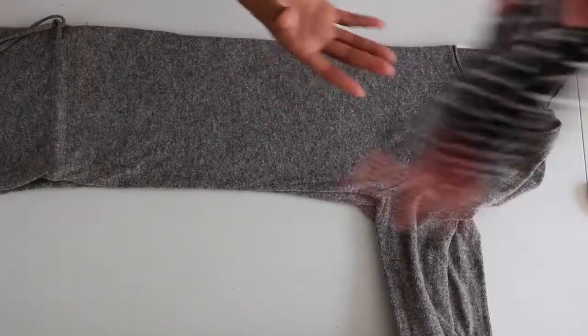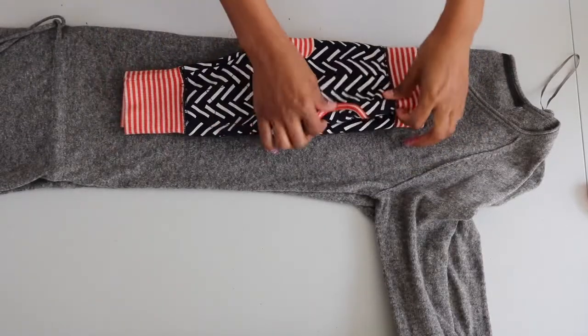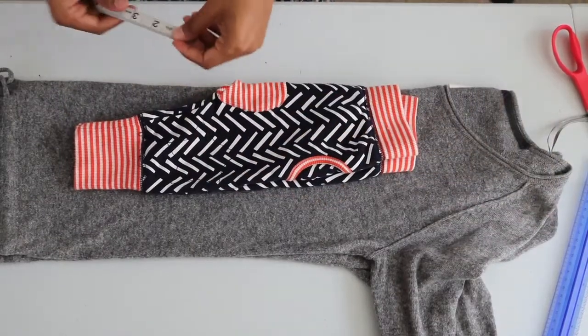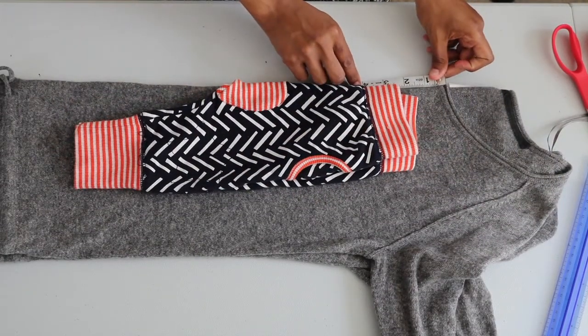First I folded the dress in half, placed the folded sweats directly over the fold. Here I'm measuring the max amount of fabric to ensure that I have enough length for the pant.